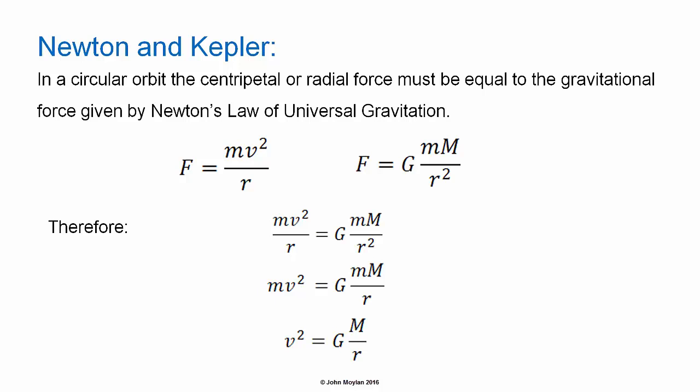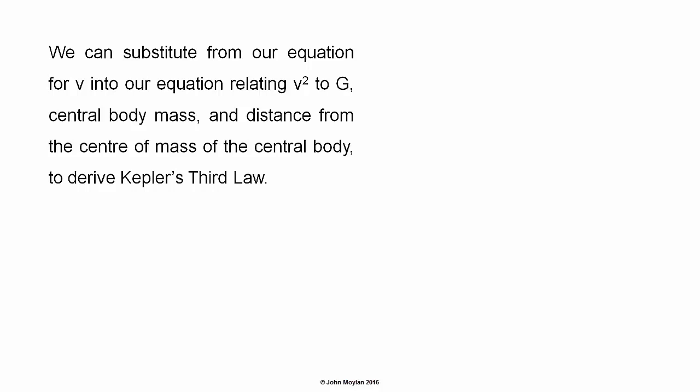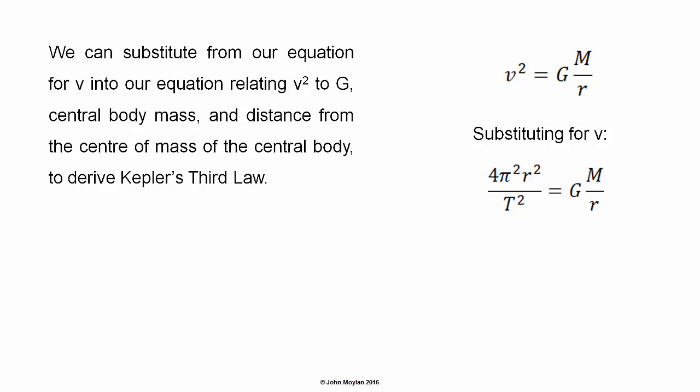We can substitute from our equation for v into our equation relating v squared to the central body mass and distance from the center of mass of the central body to derive Kepler's third law. Substituting in for v, we get 4 pi squared r squared on t squared equals capital G capital M on R. Therefore, r cubed on t squared equals capital G capital M on 4 pi squared.